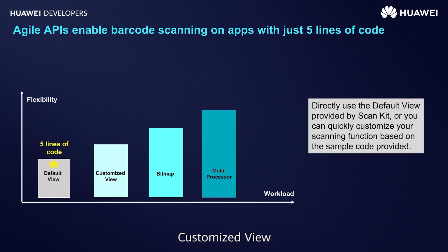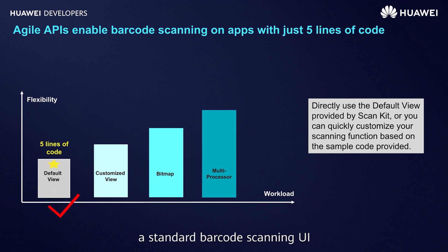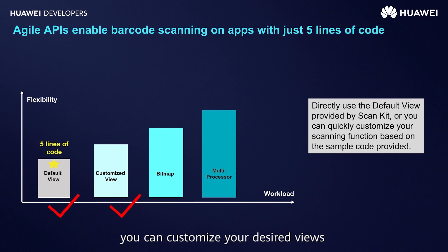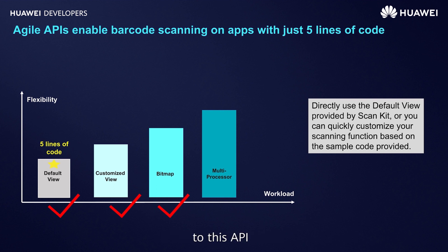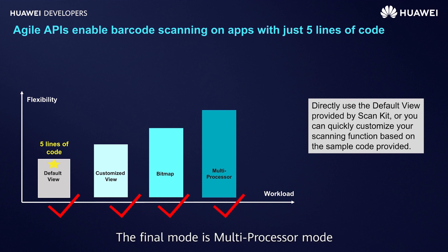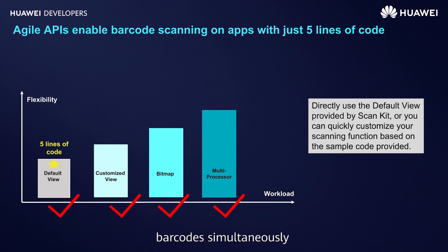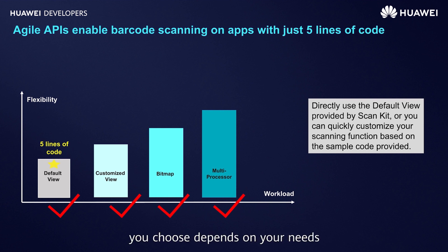The Scan SDK can be integrated in four ways: default view, customized view, bitmap, and multiprocessor. With the default view, ScanKit provides the standard barcode scanning UI and the whole integration requires only five lines of code. With customized view, you can customize your desired views based on the camera and decoding capabilities provided by ScanKit. In bitmap mode, the Scan SDK functions as a decoding API — you can pass a bitmap to this API and obtain the decoding result from it. In multiprocessor mode, the Scan SDK works as an API for identifying multiple barcodes simultaneously. The API can be called synchronously or asynchronously.